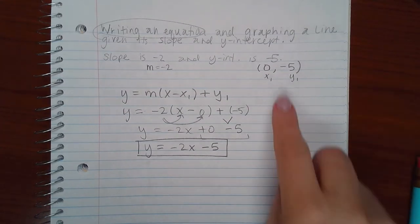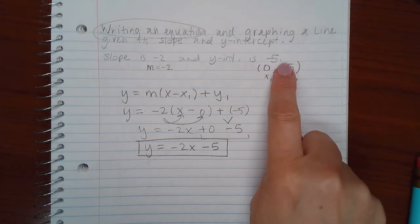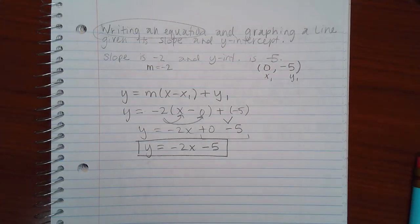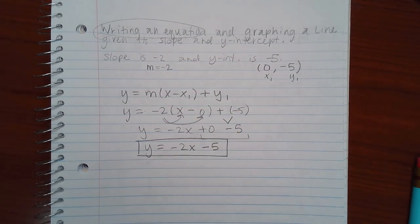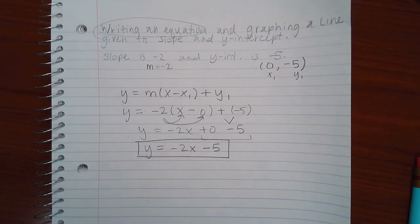This works regardless if I'm given any random point or if I'm specifically given the y-intercept. As long as you have both coordinates of the point, you should be able to give me the equation of the line with your slope.